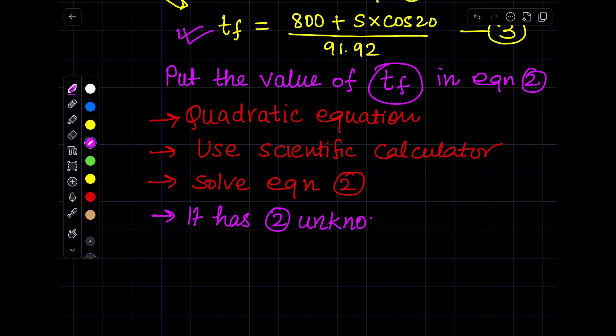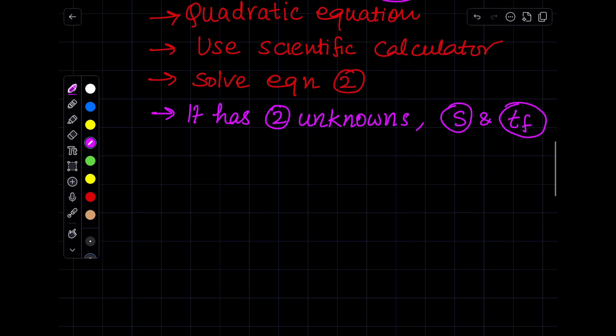So if you see this diagram in the problem, you will understand that the minus value or negative value of S is not practical. Of course the S will have a positive value. So we will use the positive value for S, and the negative value for S is wrong. It is not feasible with our problem.